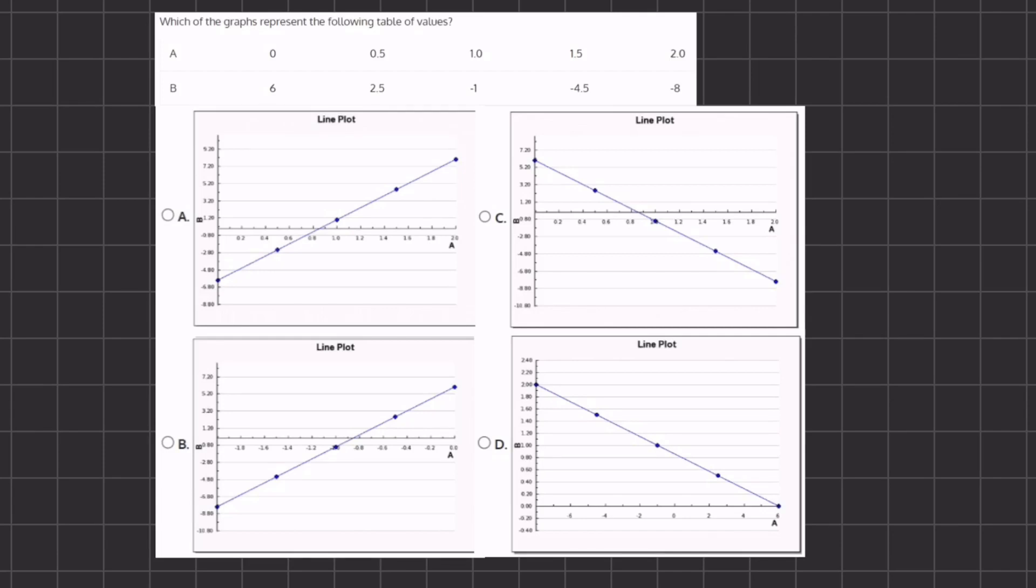All right, so in this problem we want to find which of the following graphs represents the following table of values. Now we have A and B, so we want to recognize which one is our x value or x-axis and y-axis. In this case, our x-axis is A and our y-axis is B, so we're going to read our points this way.